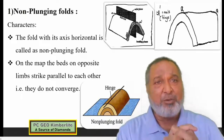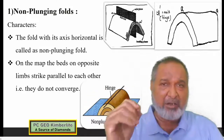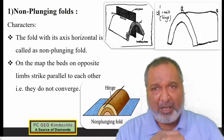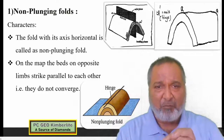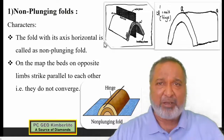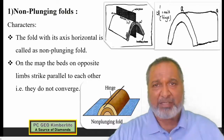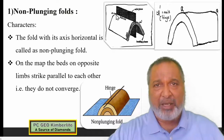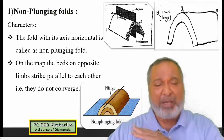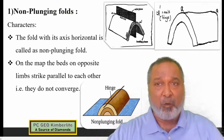Here is the first one: non-plunging fold. What is a non-plunging? You can see these sketches and one photograph. In that picture, if you see very carefully, this is a fold — an anticline — this is a fold axis and this is the axial plane. Now this axial plane remains parallel to the axis of the fold, or it remains parallel to the horizontal surface. Then this is called as non-plunging fold.